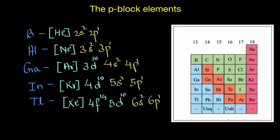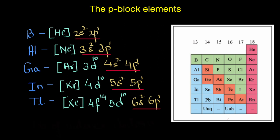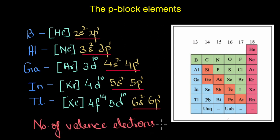Let's look at the electronic configurations of group 13 elements. What is common in these configurations? They all have the same number of valence electrons — two electrons in the s-orbital and one electron in the p-orbital, making the total number of valence electrons in group 13 equal to three. Because these elements have the same outer electrons, they also exhibit similar properties, and this is closely related to the oxidation state.